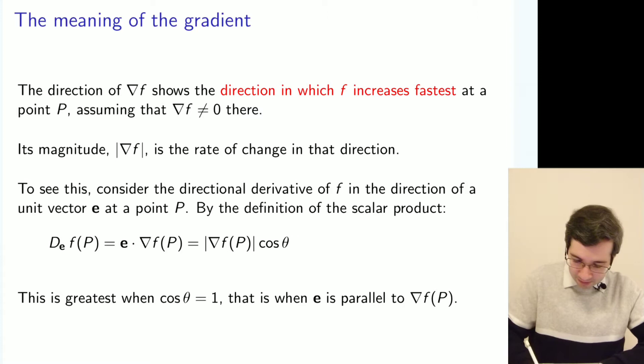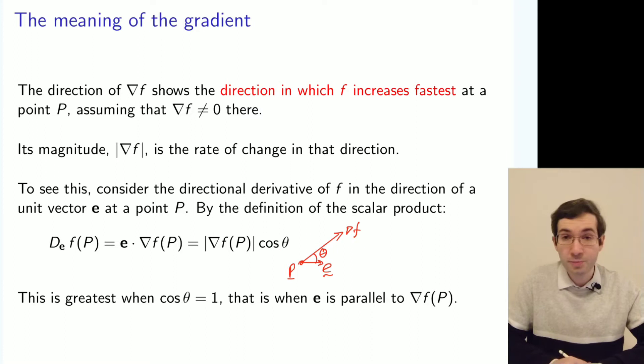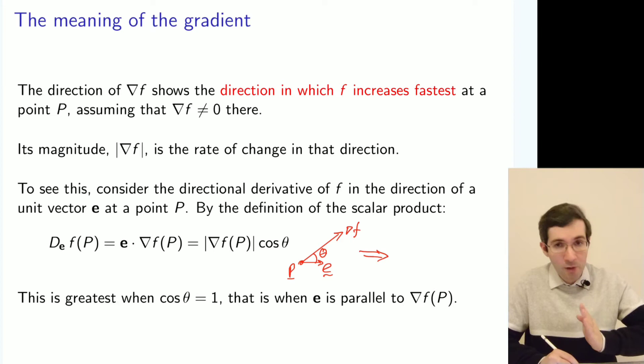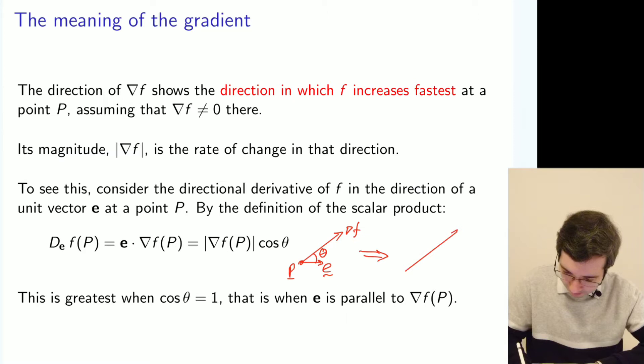If we have the gradient at point P and a unit vector with an angle between them, for the directional derivative to be as large as possible, cosine must equal 1. That means the direction of the gradient is the same as the direction where we compute the directional derivative. The rate of change will be maximum if we move along the gradient.